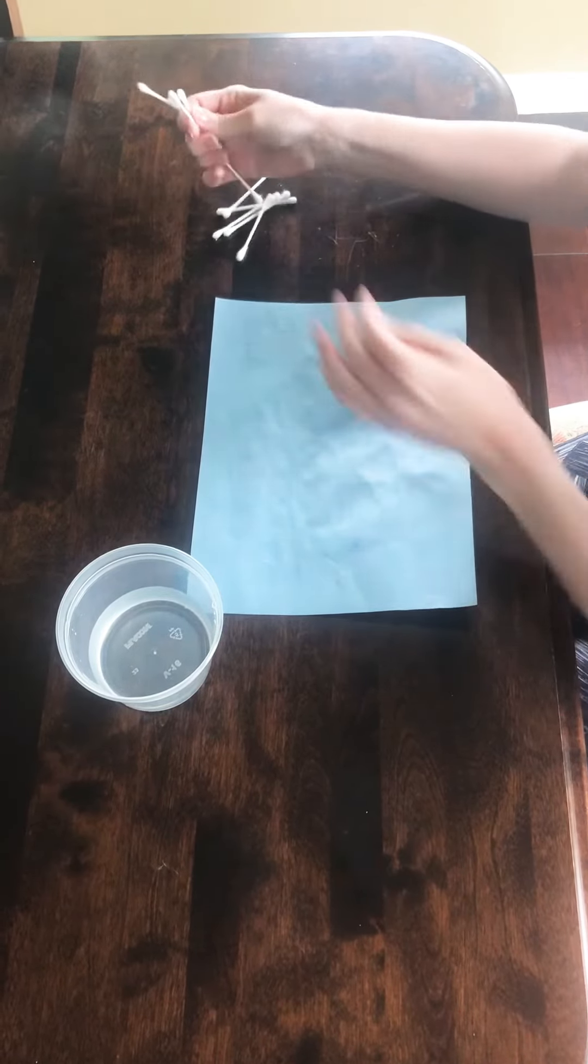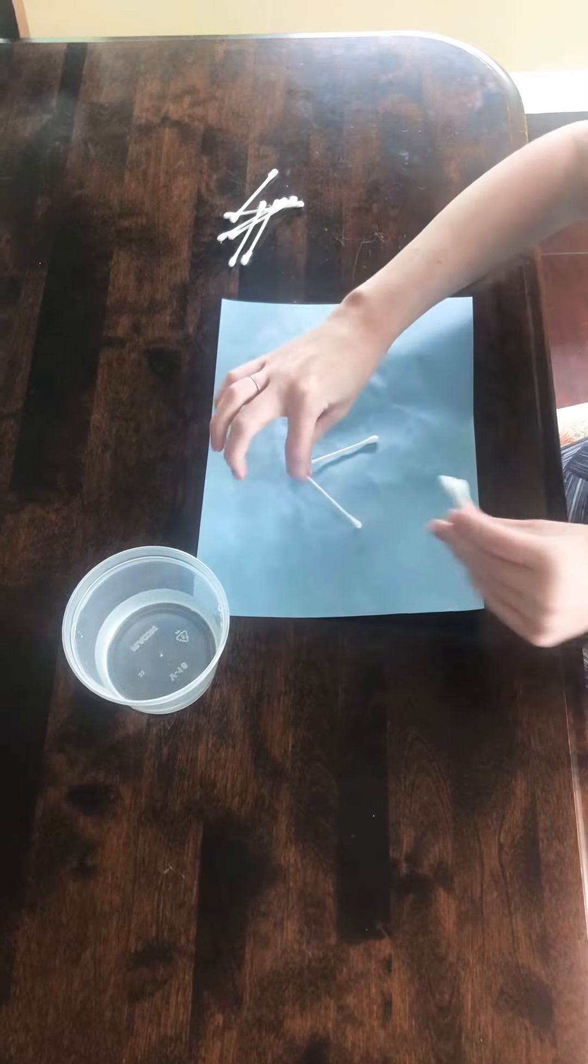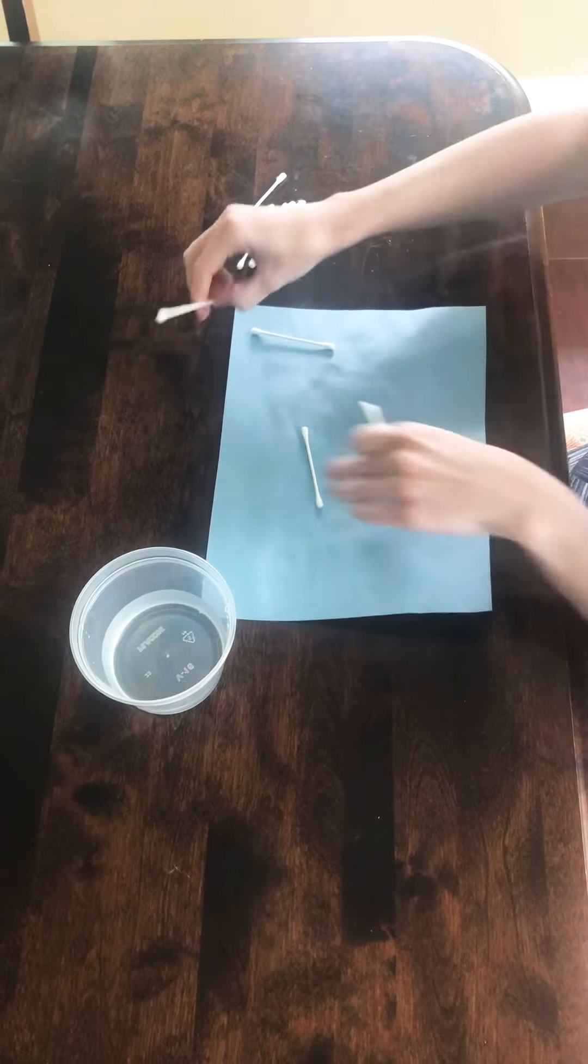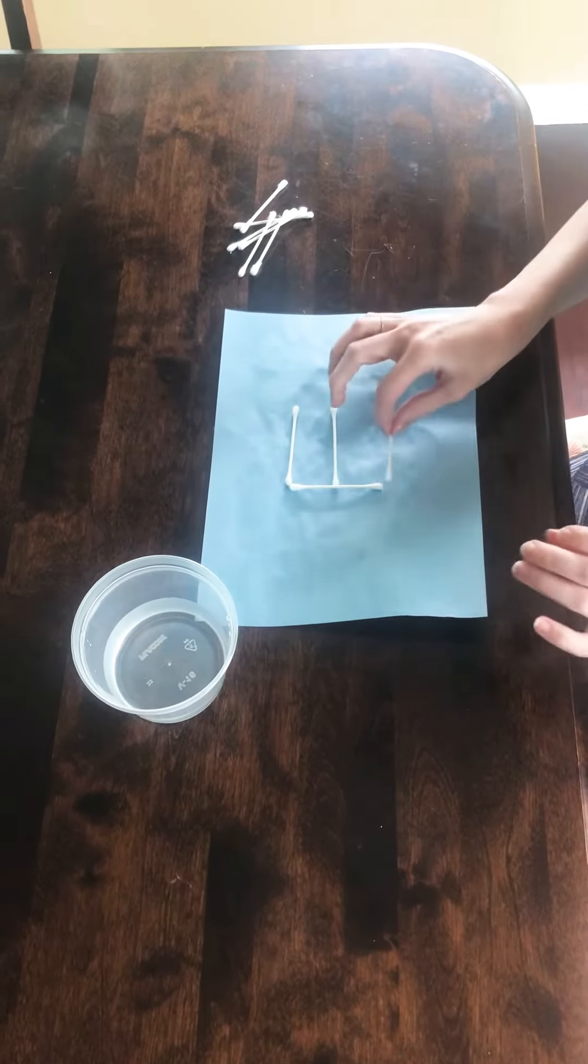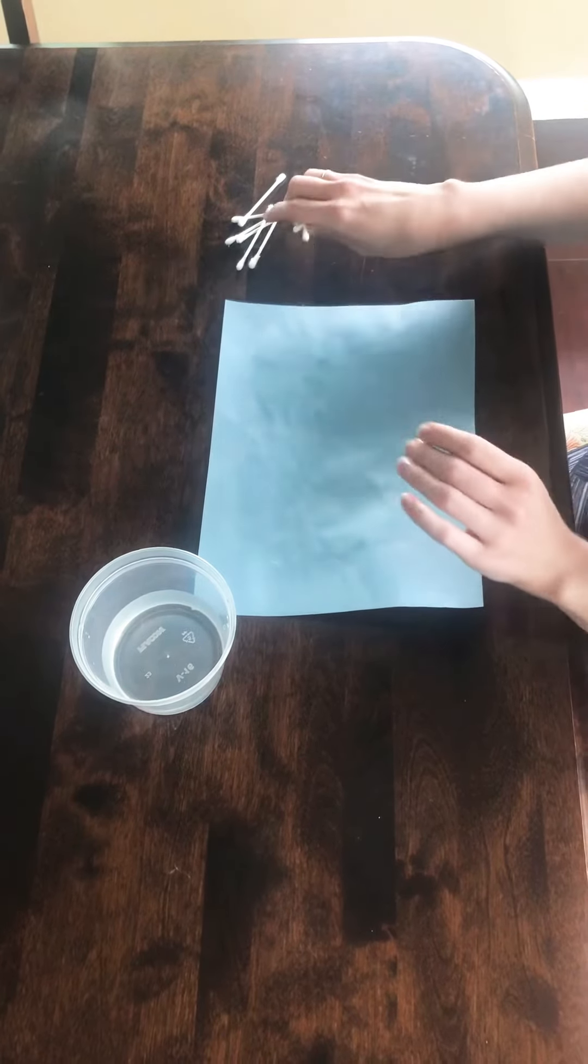One of my favorite things to do with q-tips is to make shapes and letters. You can put q-tips together and make a triangle, or put them together to make letters like the letter E. This is a fun way to practice with your kids and work on fine motor skills.